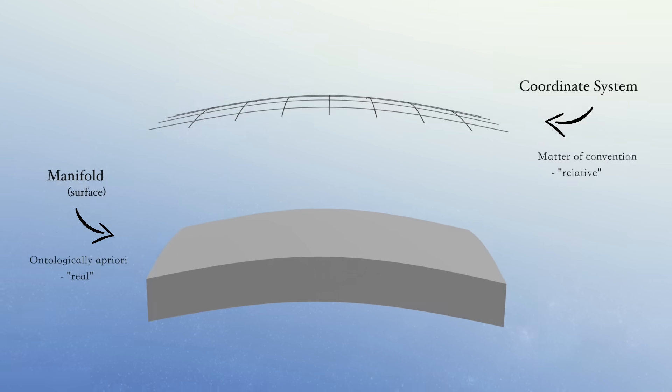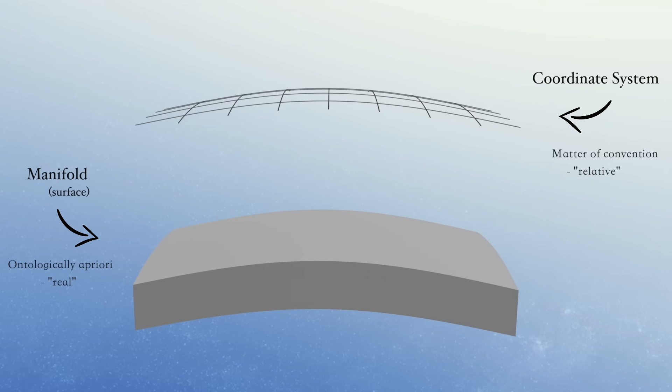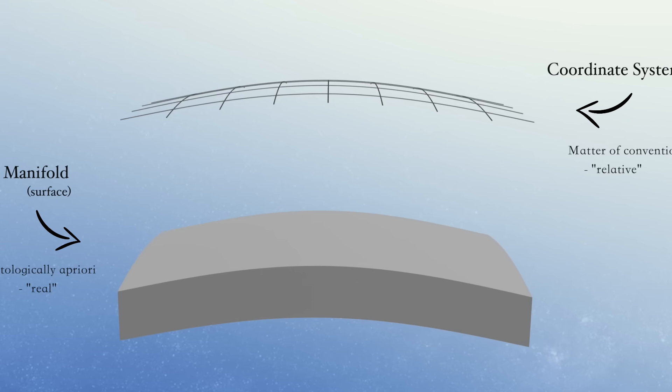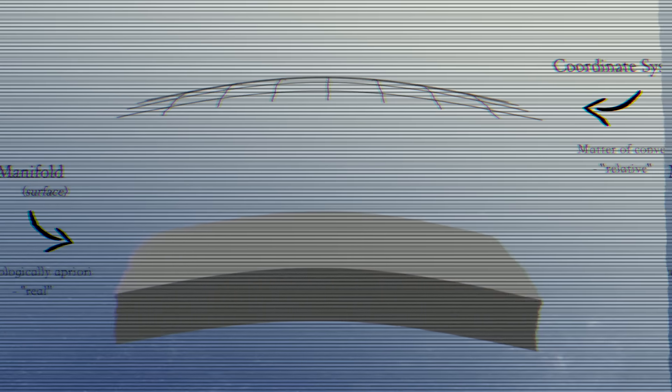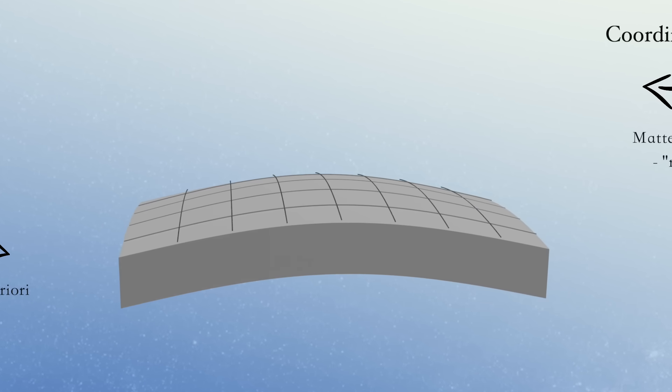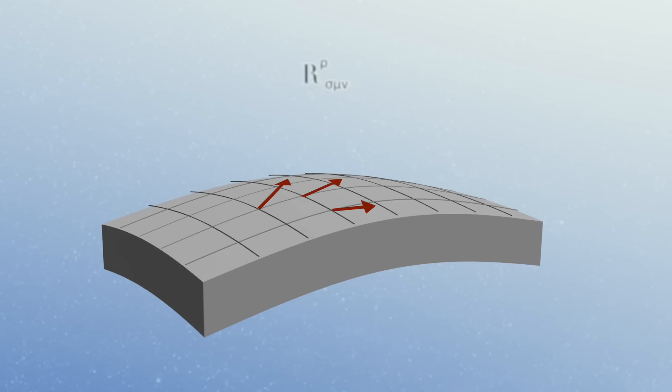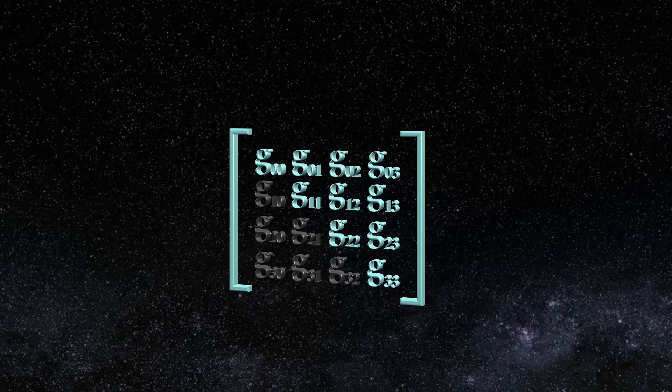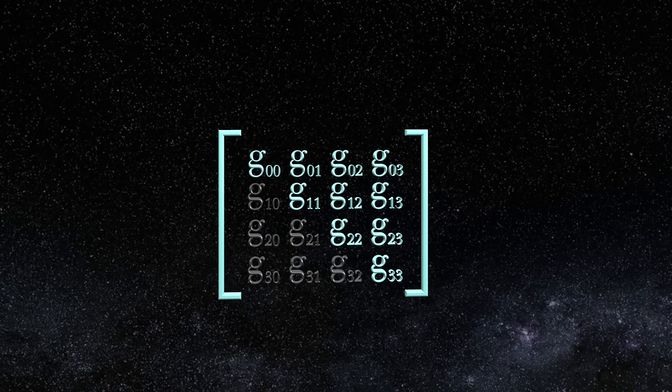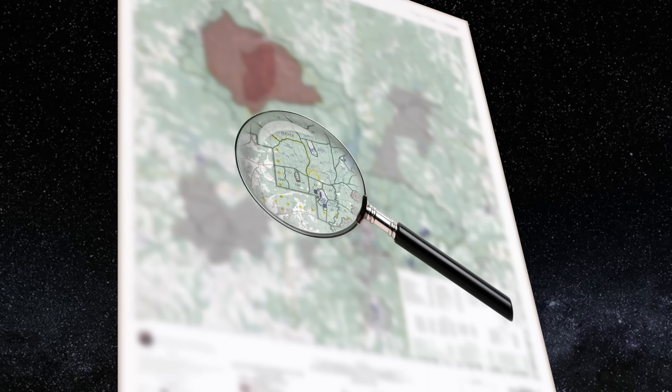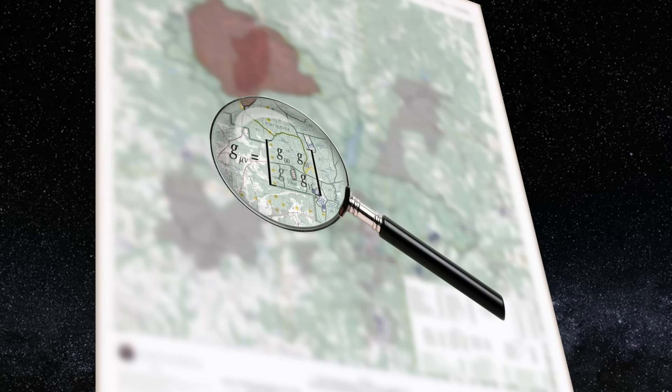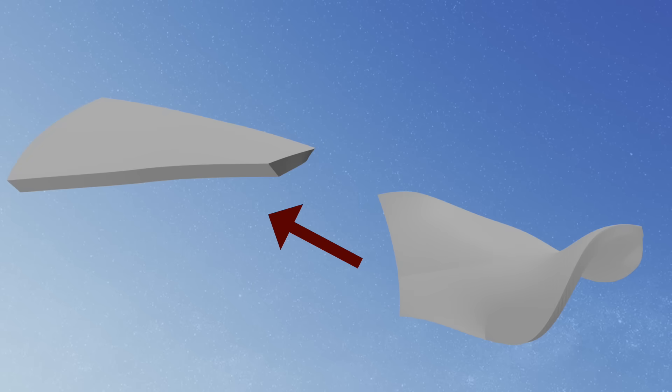The separation between coordinate systems and manifolds can be an intuitively difficult pill to swallow. But it's a crucial idea which ultimately leads to the more sophisticated concept of curvature. For the moment, however, the main takeaway here is that the metric tensor becomes involved whenever you're using some type of map. Meaning the representation of one surface by that of another.